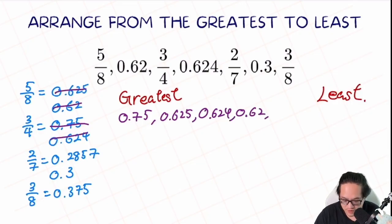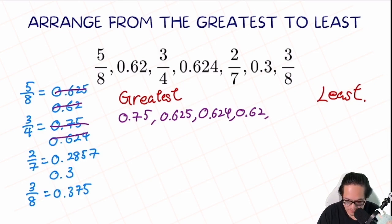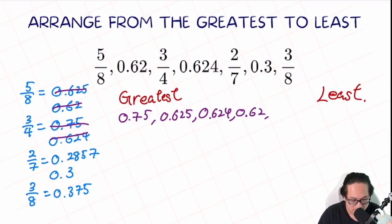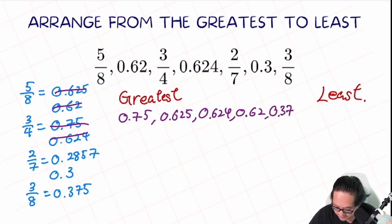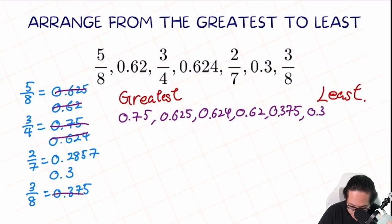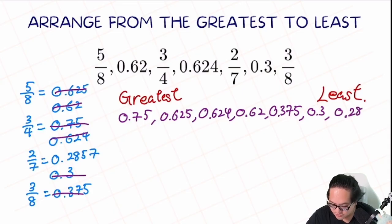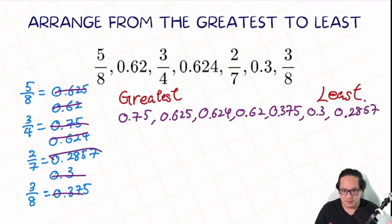Now all the 6s in the tenths unit are compared. Looking at the rest, in the tenths unit we have a 2 and two 3s — the 3 is bigger than 2. For the two numbers with 3 in the tenths, looking at the hundredths: one has a 7 and one has nothing. So 0.375 comes before 0.3. And the last remaining number is 0.2857. We've now lined everything up from the largest to the smallest.